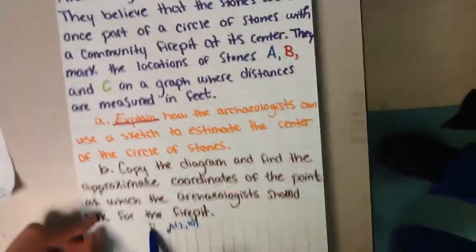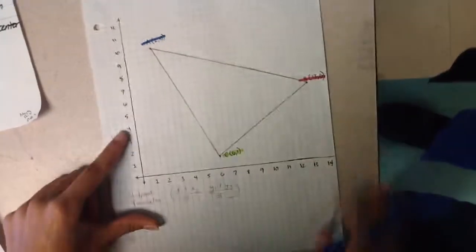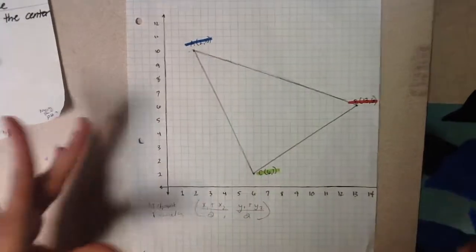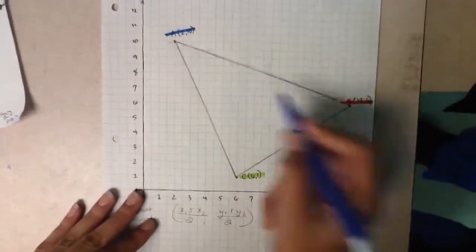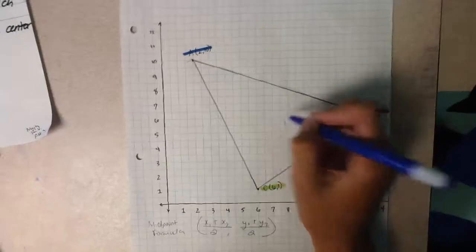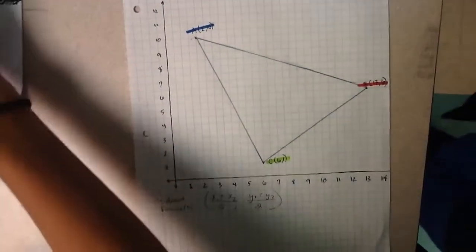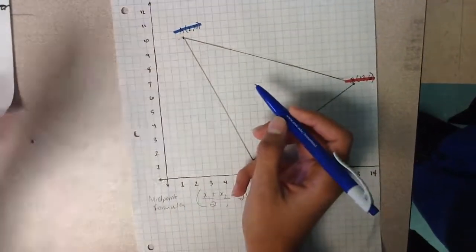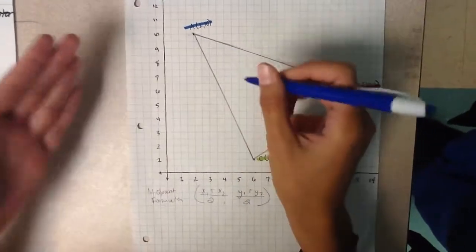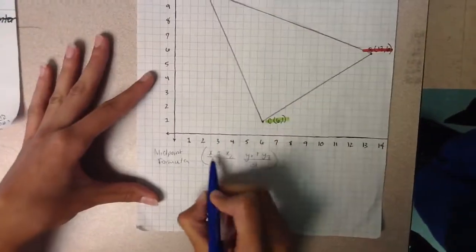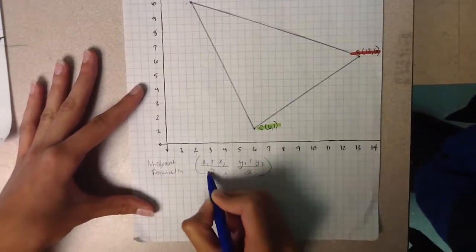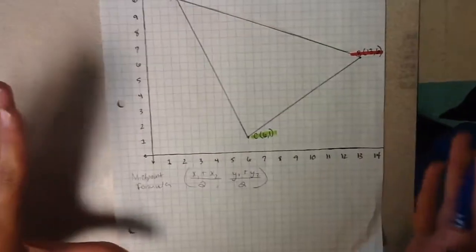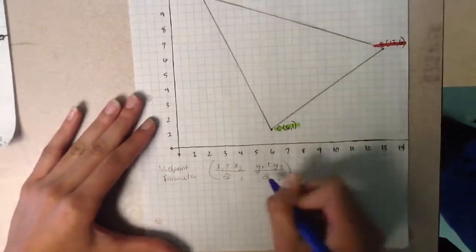For part B, we have to copy the diagram and find the approximate coordinates of the point. I already have it copied down, and I already formed the little triangle because it's going to help us find the perpendicular bisectors. Since we are trying to find the perpendicular bisector and we know that the midpoint is the middle of a line segment, we're going to use the midpoint formula, which is x1 plus x2 over 2, and y1 plus y2 over 2.